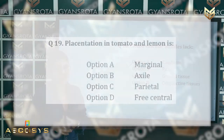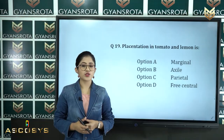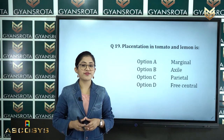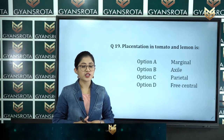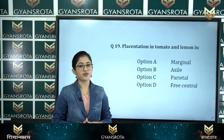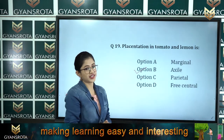Question number 19: Placentation in tomato and lemon is — option A marginal, option B axile, option C parietal, option D free central. We have discussed placentation in the chapter Morphology of Flowering Plants. The placentation in tomato and lemon is axile, so option B is the correct answer.